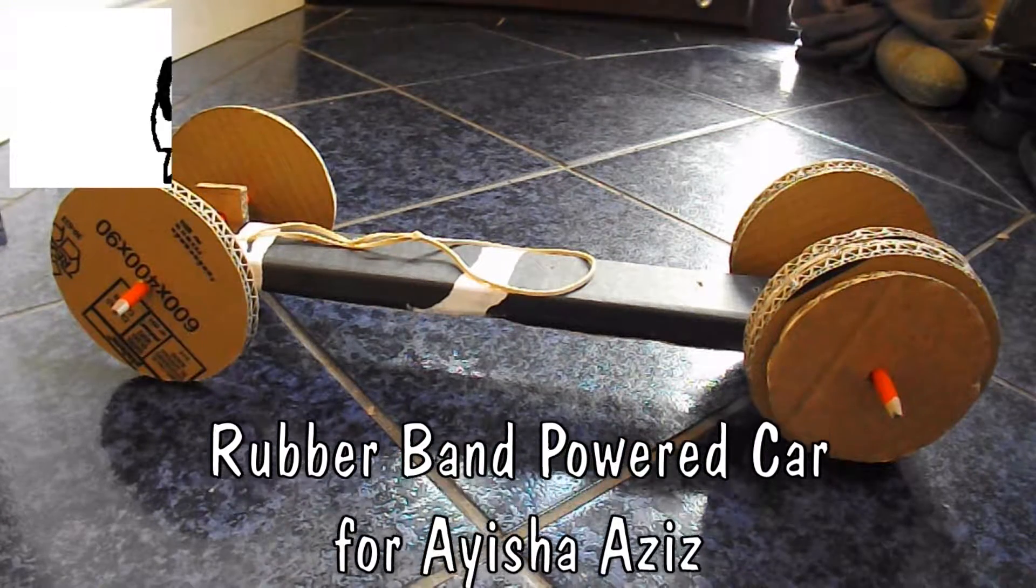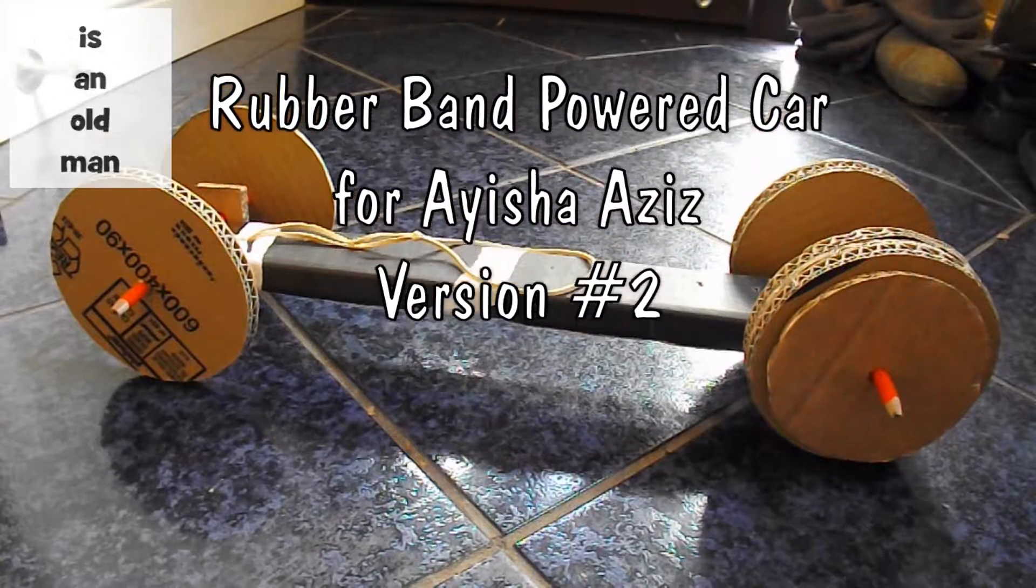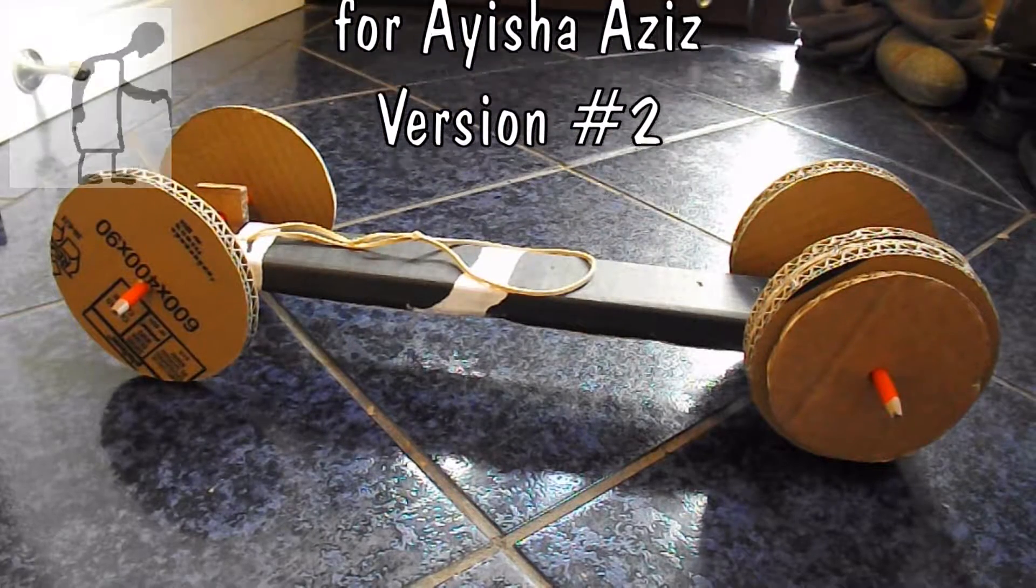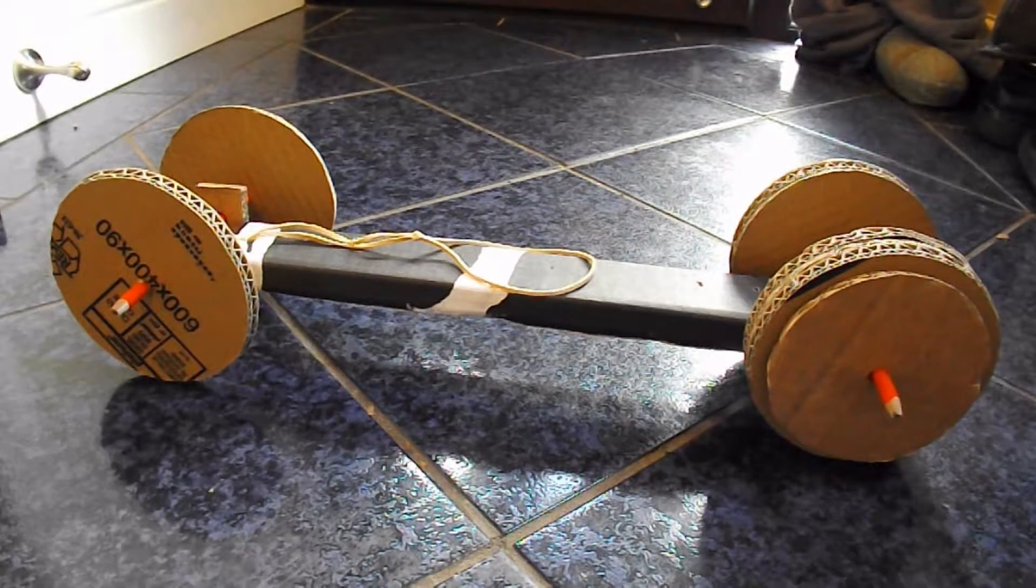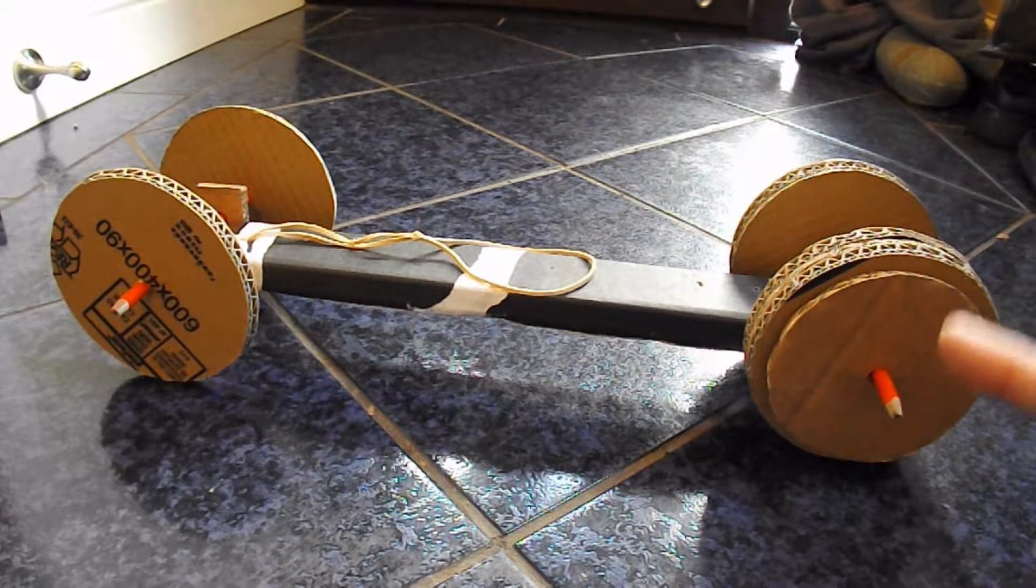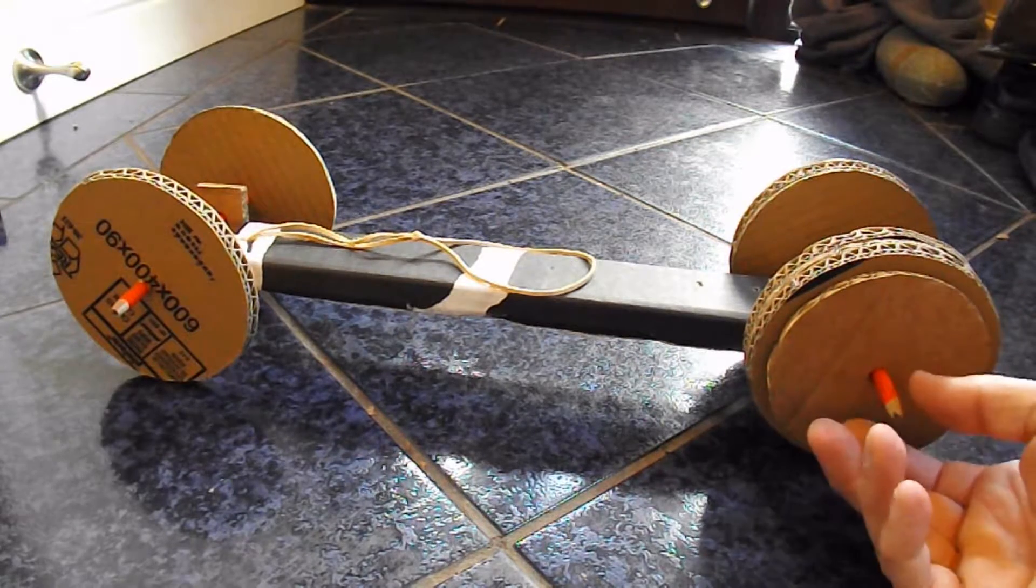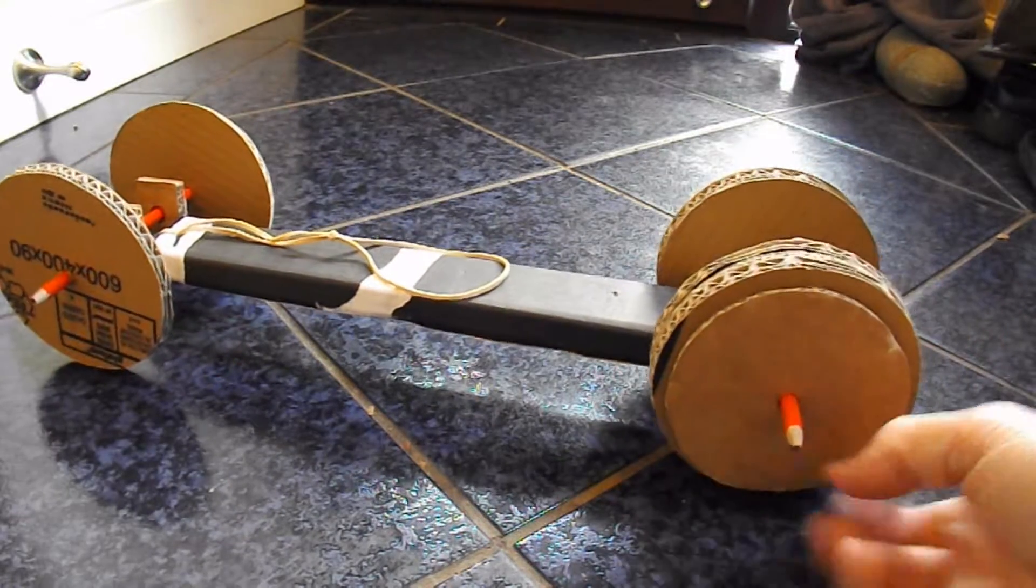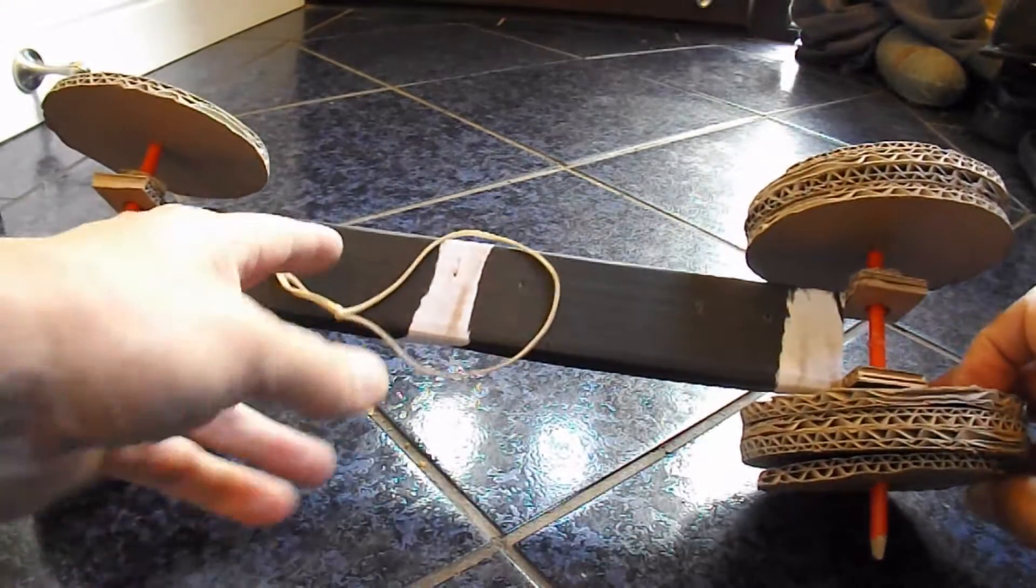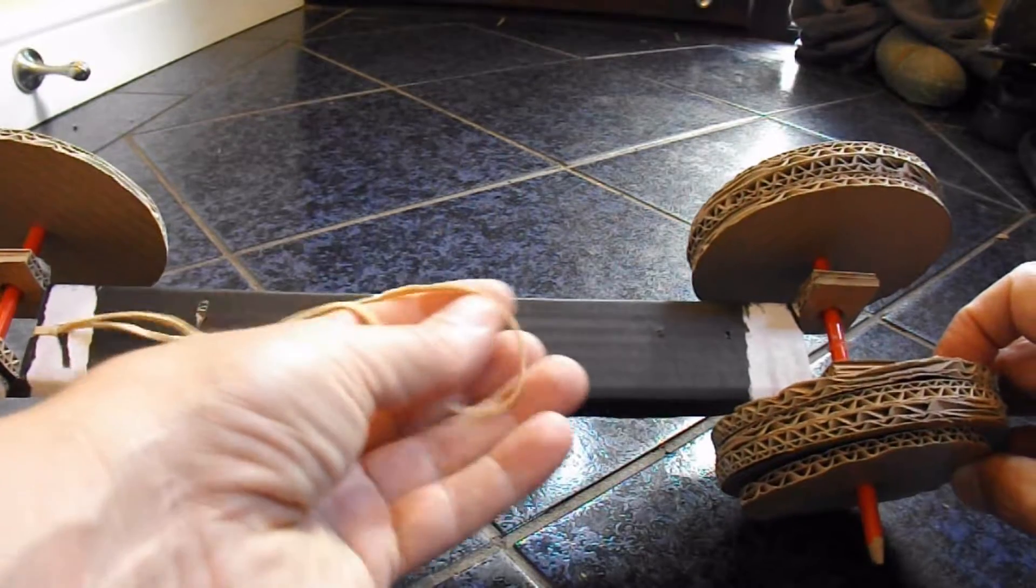Hi guys. I had to do a rethink on this car for Aisha Aziz because she's come back and told me that you can't use paper clips on it. So this car is now just cardboard with pencils for axles and a number 64 rubber band split in half to make it longer.